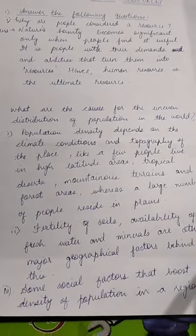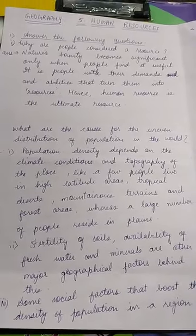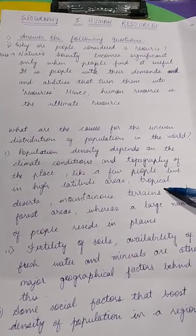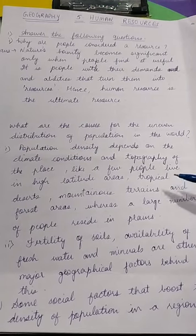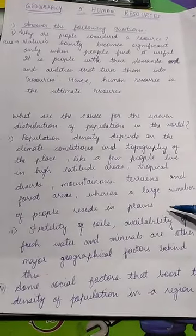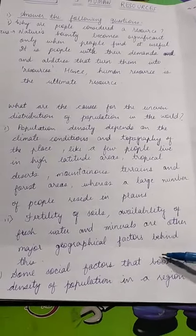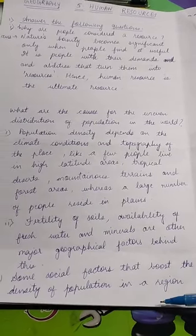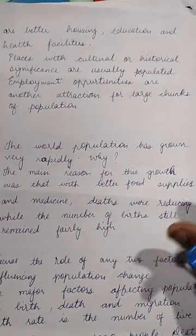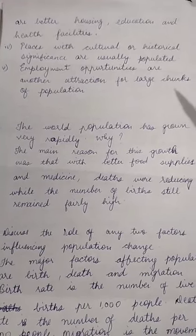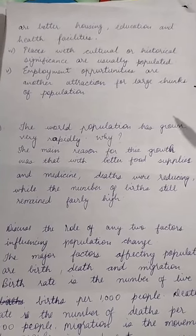Question number 2. What are the causes for the uneven distribution of population in the world? Answer. Population density depends on the climate conditions and topography of the place — few people live in high latitude areas, tropical deserts, mountainous terrains and forest areas, whereas a large number of people reside in plains. Fertility of soils, availability of fresh water and minerals are other major geographical factors. Some social factors that boost population density include better housing, education and health facilities. Places with cultural or historical significance are usually populated. Employment opportunities are another attraction for large chunks of population.